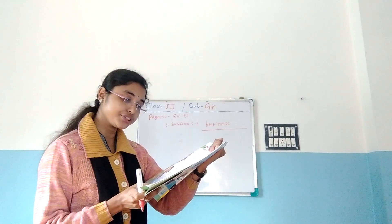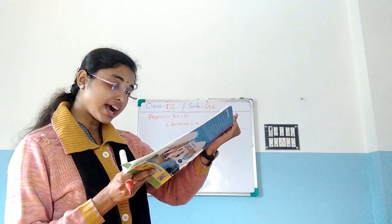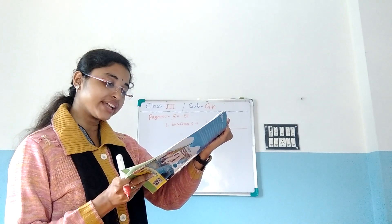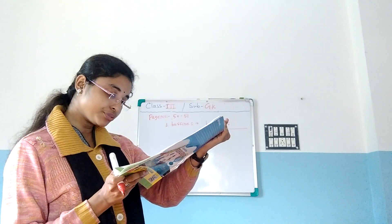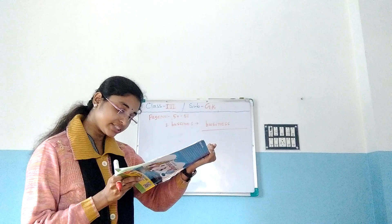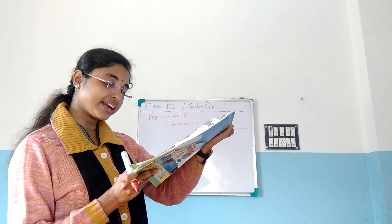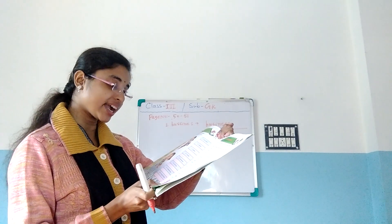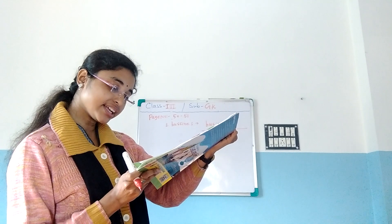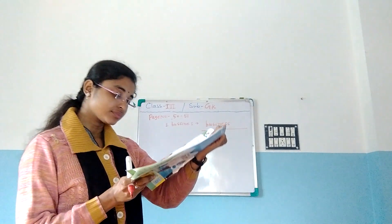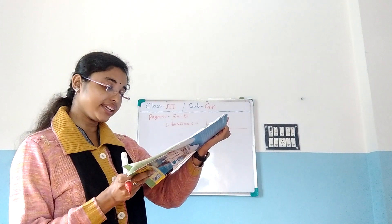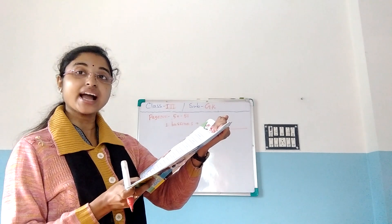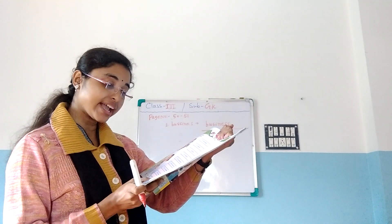Number 11: Cut your coat according to your cloth. Cut your coat according to your cloth. Number 12: A jack of all trades is master of none. The answer is Trades, T-R-A-D-E-S. Number 13: Make hay while the sun shines. The answer is A-H-A-Y. Number 14: The proof of the pudding is in the eating. P-U-D-D-I-N-G.